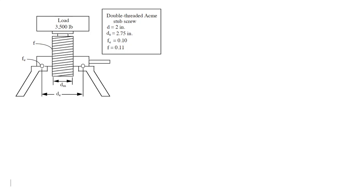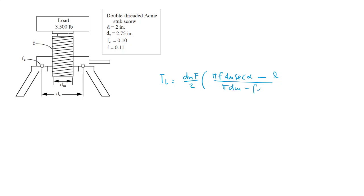I used the wrong hotkey and stopped recording, so I'm missing the last two problems. I'm going to try to make up for that. In the torque equation for lowering the load, if this value is negative or zero, it means that I don't require any torque to lower the load — that only happens if this value is zero or lower than zero.